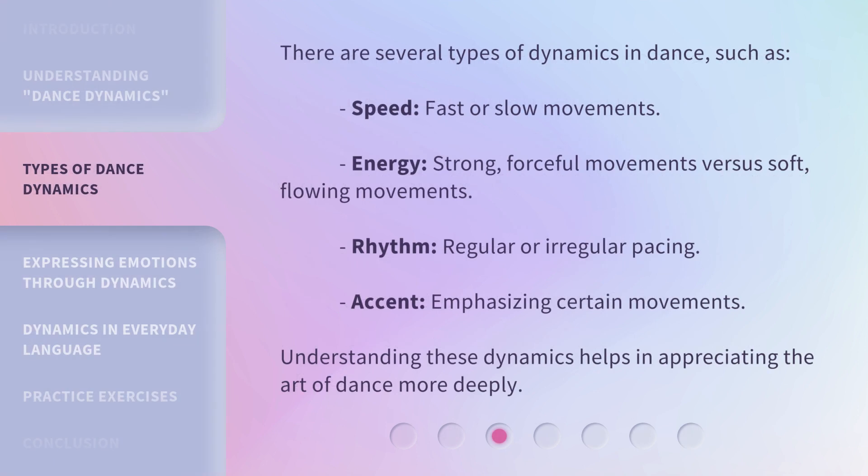There are several types of dynamics in dance, such as speed — fast or slow movements; energy — strong, forceful movements versus soft, flowing movements; rhythm — regular or irregular pacing; and accent — emphasizing certain movements. Understanding these dynamics helps in appreciating the art of dance more deeply.